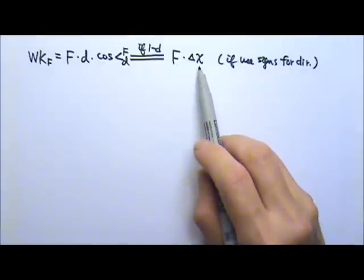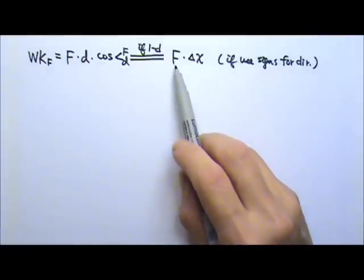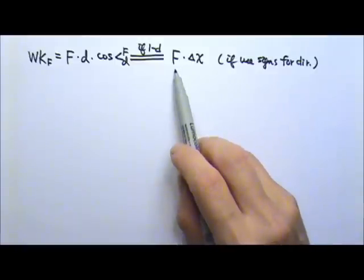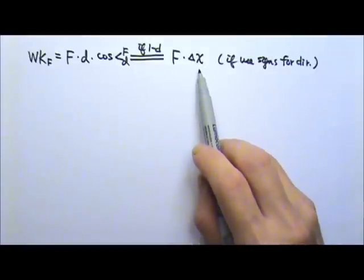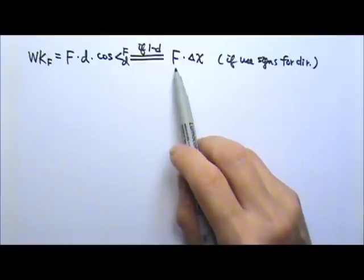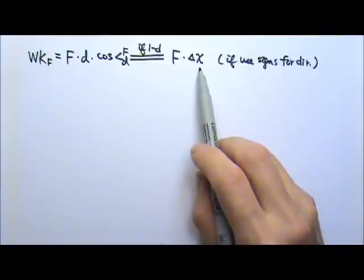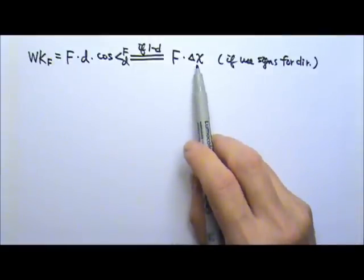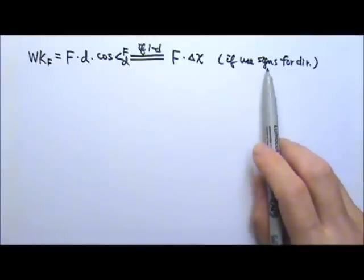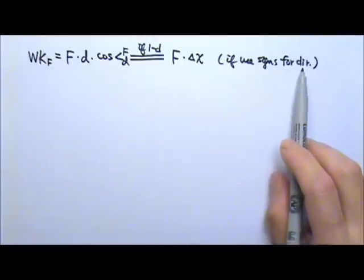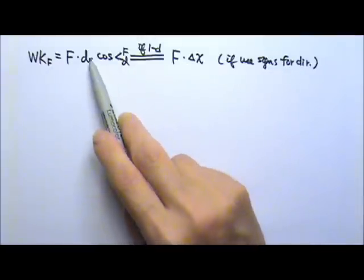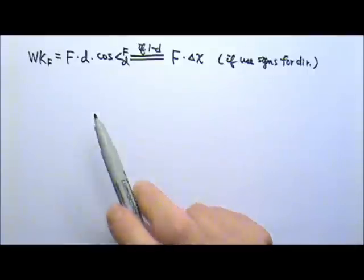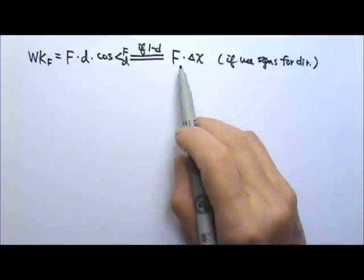If they are in opposite directions, one will be positive and one negative, so either way you get negative work done. If we use the signs embedded in these quantities for direction, then we don't need the cosine term.